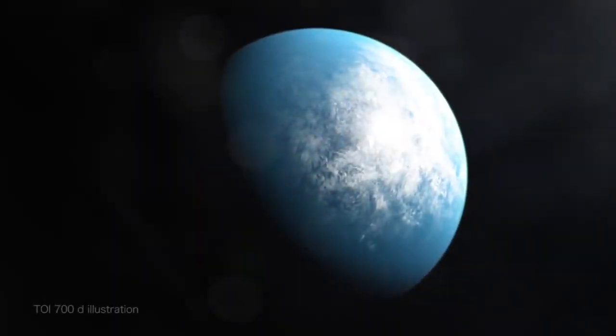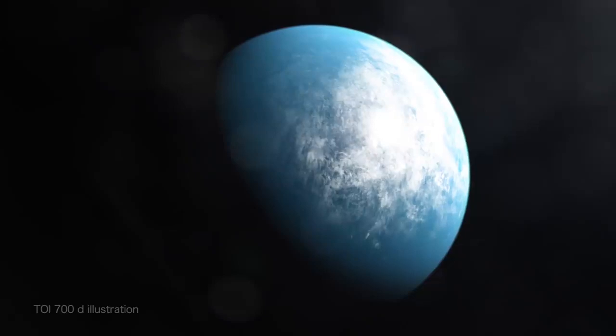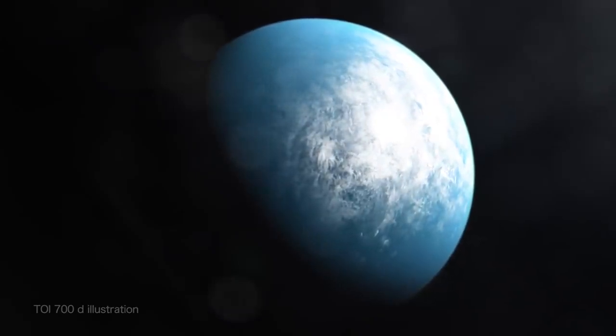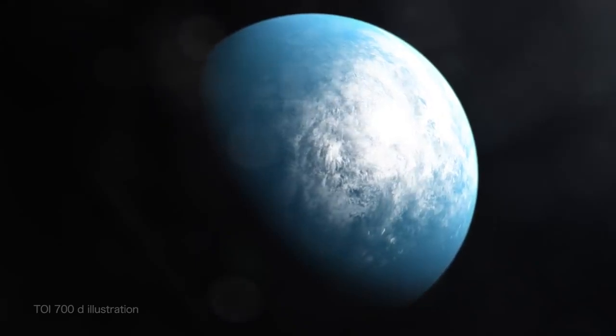NASA's TESS mission has found its first Earth-sized world in its star's habitable zone. This means the planet, called TOI-700d, has the potential for liquid water on its surface.